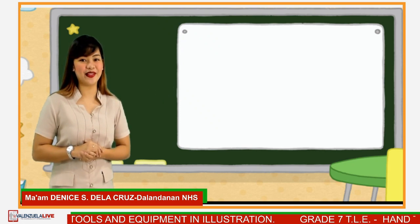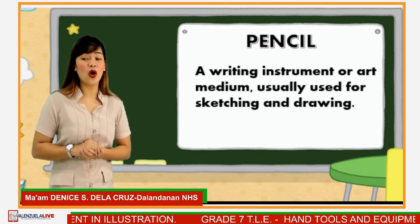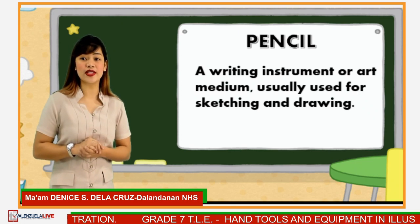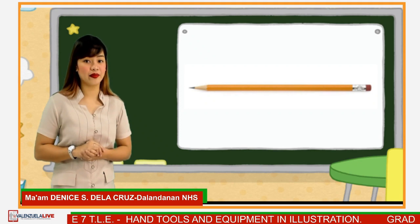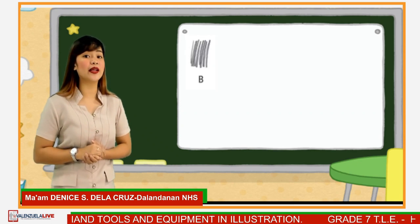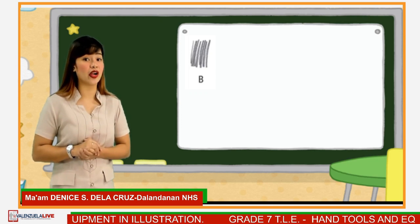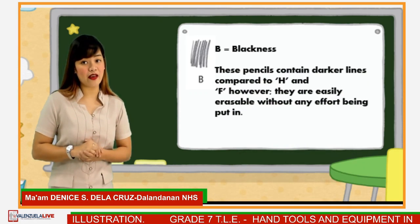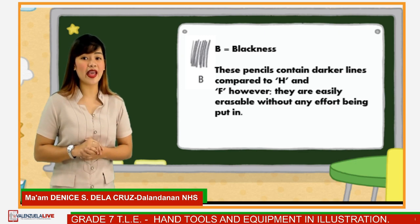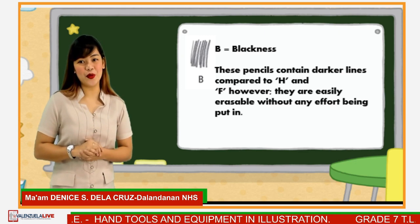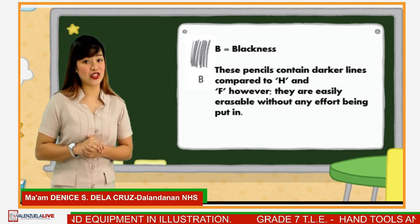Next tool is the pencil. A pencil is a writing instrument or art medium usually used for sketching and drawing. We have types of pencil. The first type is called B or blackness. These pencils contain darker lines compared to H and F. However, they are easily erasable without any effort. You can use this for note-taking purposes, doodling, and sketching as well.